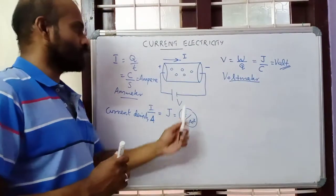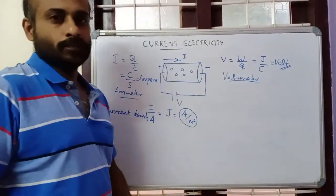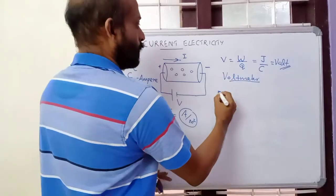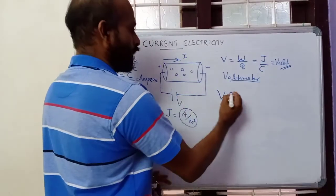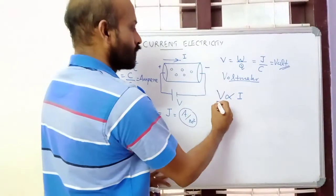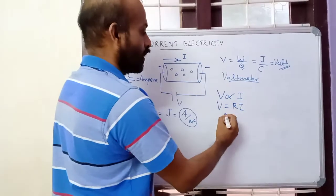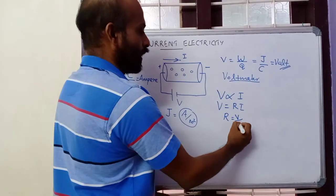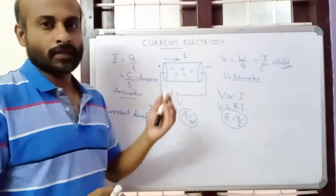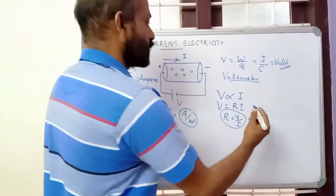Now I will state Ohm's law. When electrons flow through a conductor, the potential difference across the conductor is directly proportional to the current flowing through it at constant temperature. So V is equal to a constant R into I. R is called the resistance. R equals V by I. Resistance means it is the opposition provided by the conductor for the flow of electric charges.